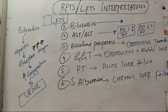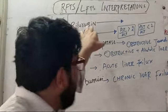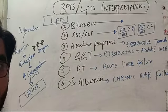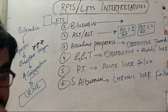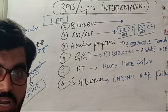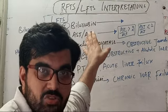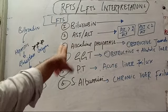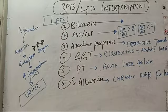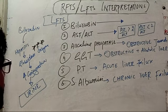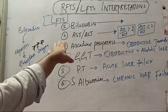Bilirubin comes from the metabolism of RBCs. If you are having unconjugated hyperbilirubinemia — that is, unconjugated bilirubin increases in the blood — the cause is pre-hepatic. The main causes are hemolytic anemias or ineffective erythropoiesis. If you are having conjugated hyperbilirubinemia, the cause is hepatic or post-hepatic.